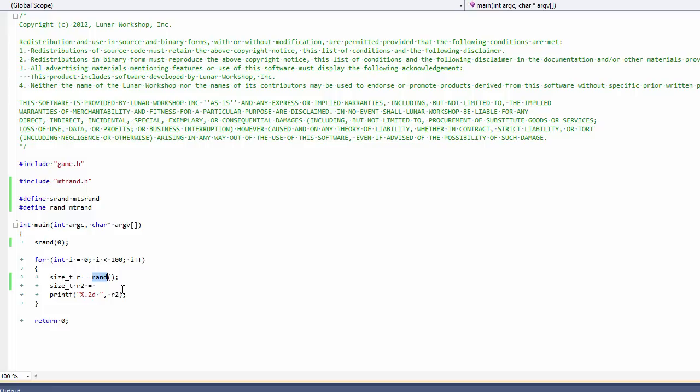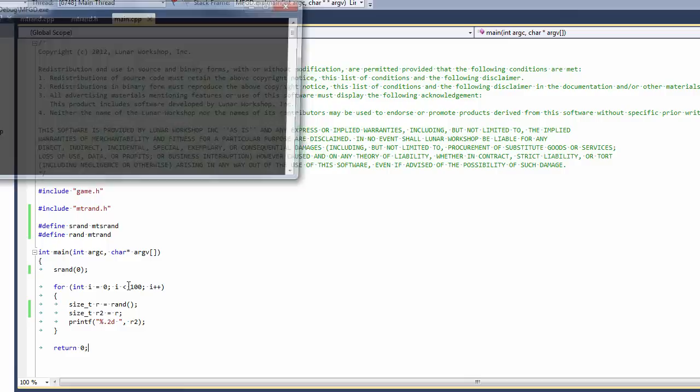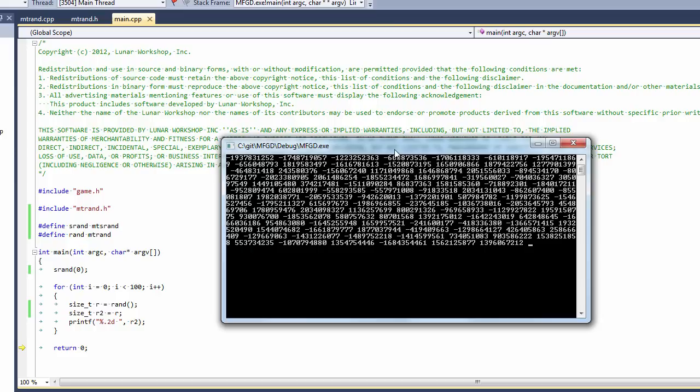We're generating 100 random numbers with our pseudo-random number generator. And it's going to give us, in fact, I'll show you exactly what it gives us. If I just generate 100 random numbers, then it's going to give me a bunch of, look at these guys. They're huge. This is not even between 0 and 2 to the 15 minus 1. This is probably going to be between negative 2 to the 31 and positive 2 to the 31 minus 1. Something really big like that.